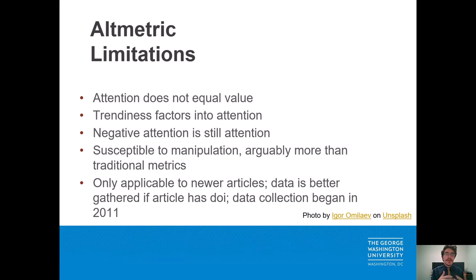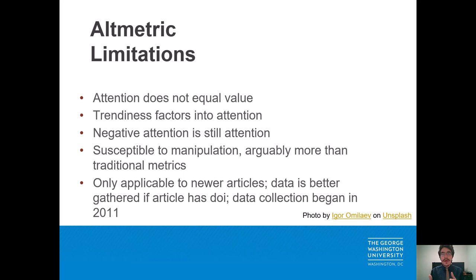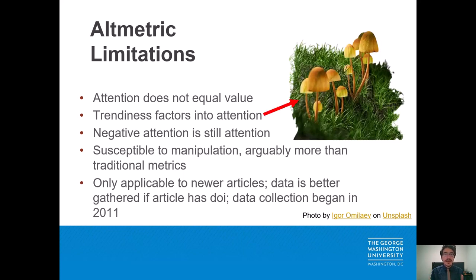Of course, altmetrics have their own set of limitations, some of which parallel and some mirror those of traditional metrics. For example, it's worth saying that attention does not equal value. Just as citation count can snowball, what gets attention can get more attention, and important works can be left under-assessed. It's also worth saying that trendiness factors heavily into attention. The article I've been featuring is about psilocybin, aka magic mushrooms — it's not hard to see why this would get a lot more attention on Reddit, YouTube, and news outlets than something like an article about deep vein thrombosis.